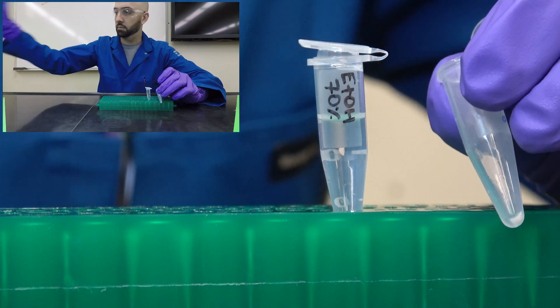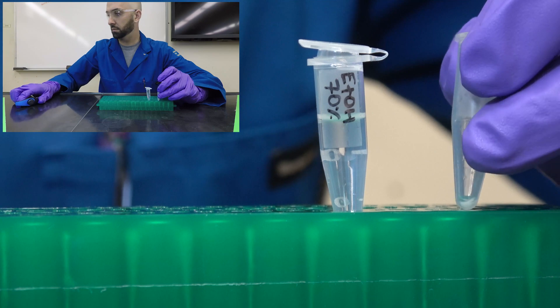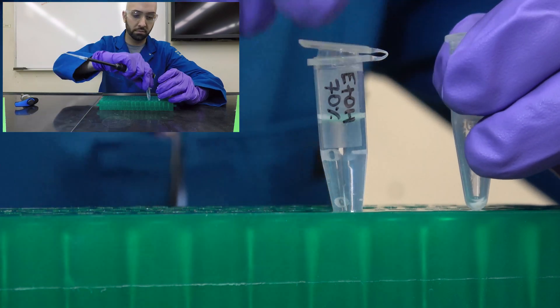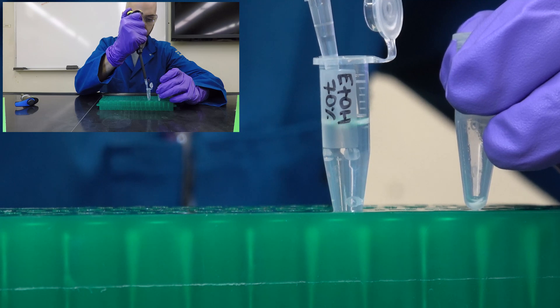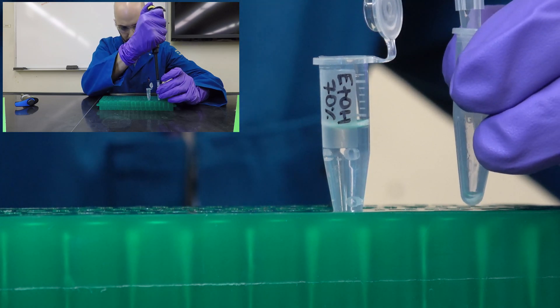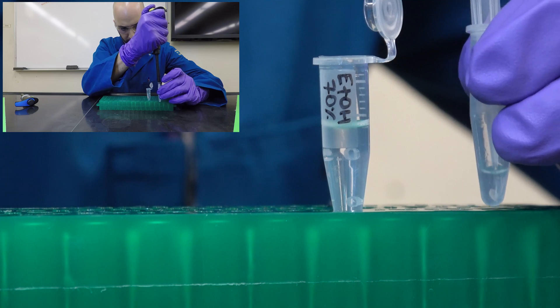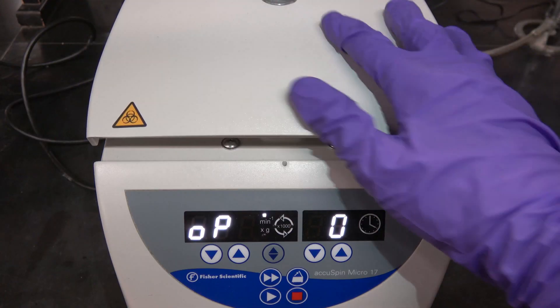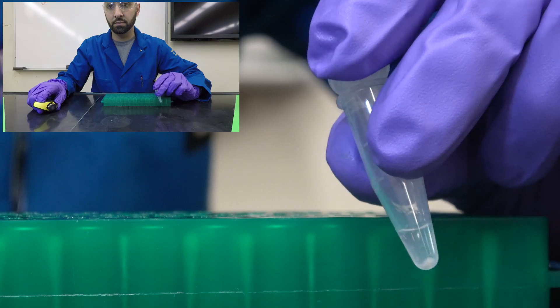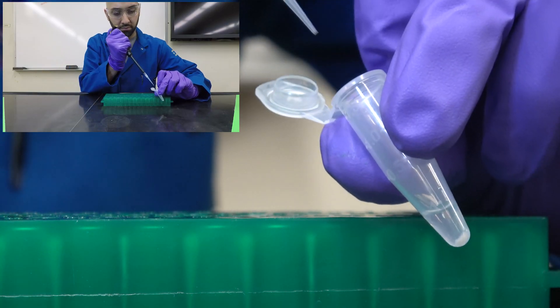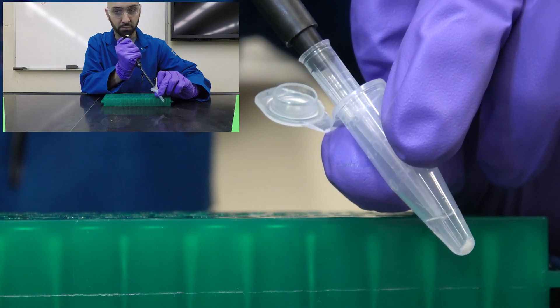We'll then add 70% ethanol to wash the pellet of unwanted salts. The 30% water is enough to solubilize salts but maintain insolubility of DNA. We need to recentrifuge the dislodged pellet so it will spin down for 1 minute at max speed. We can then remove the 70% ethanol and let the pellet air dry for 1-5 minutes.